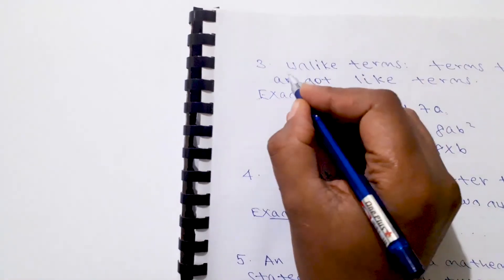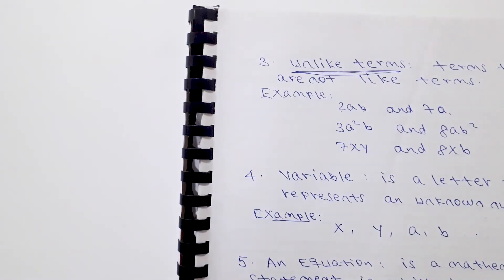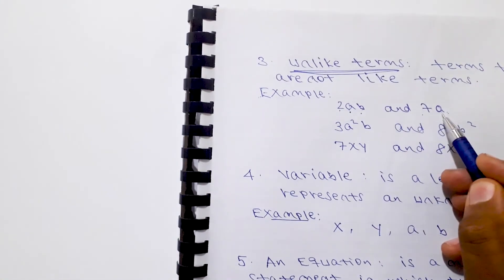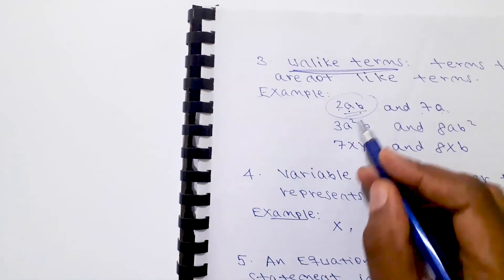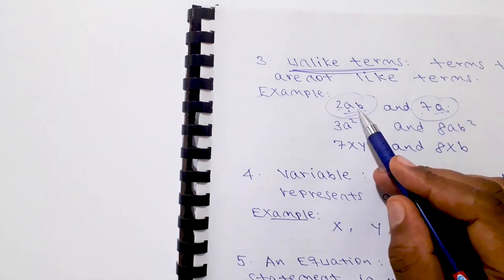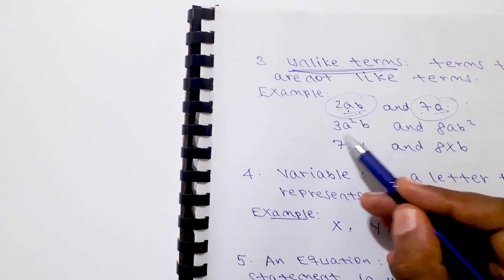Now unlike terms — unlike term is the opposite of like term. Unlike terms are terms that are not like terms. Their variables are different or the exponents of their variables are different. For example, a·b and another term with a different variable — that would be an unlike term.